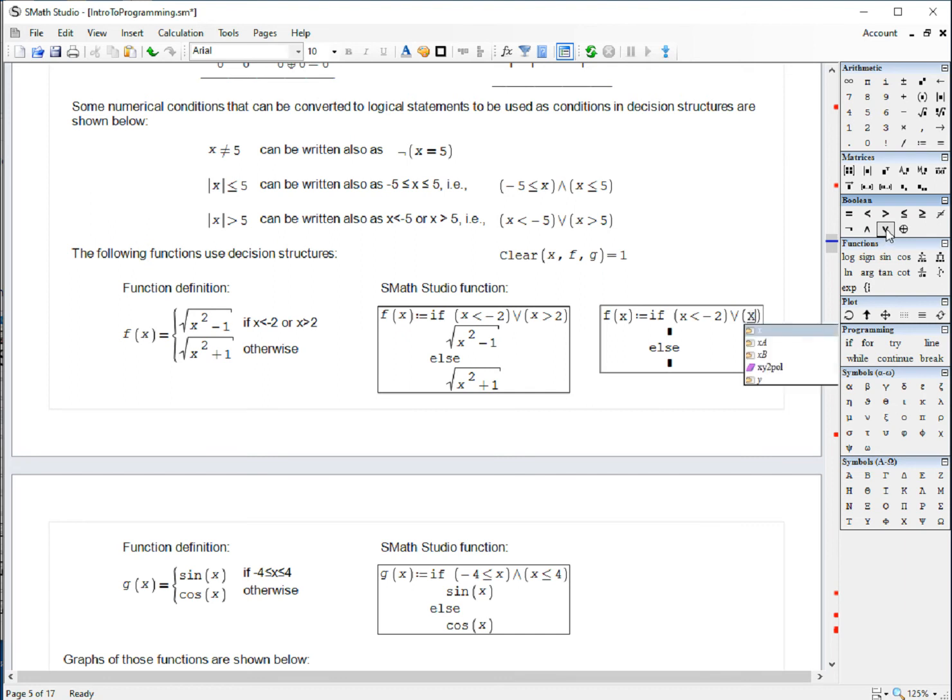X greater than 2. If that is the case, we will type square root of X square plus 1. And that's how we create a piecewise function using the IF statement, using this as our condition for truth.